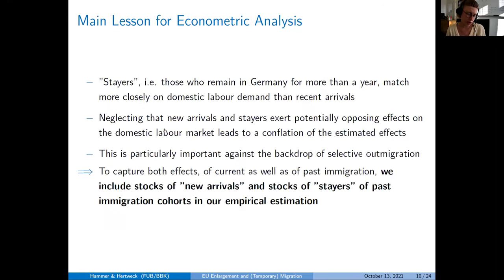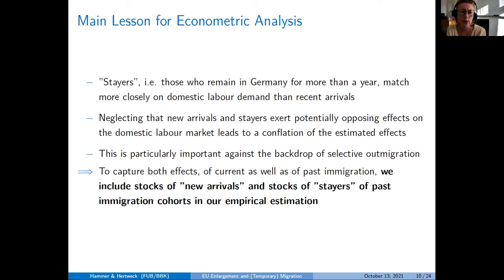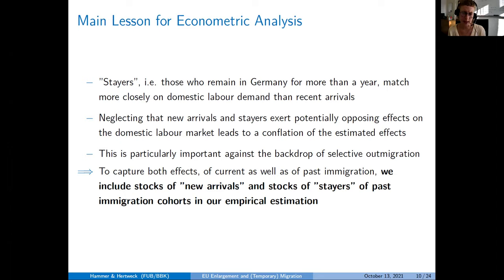What do we learn from this for our econometric analysis? Stayers match more closely on domestic labor demand, earn higher wages, and are less often unemployed. It makes sense to assume that new arrivals and stayers exert potentially opposing effects on the domestic labor market. Neglecting this leads to a conflation of estimated labor market effects. To capture both the effect of current and past immigration, we include the stocks of new arrivals and the stocks of stayers in our empirical analysis.